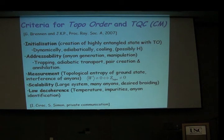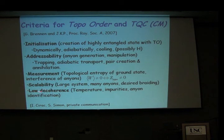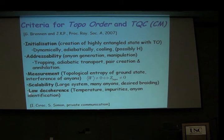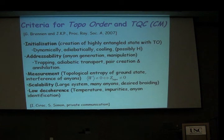Then you have addressability, because you would like in principle to generate anyons and braid them. The measurement comes as a measurement outcome after braiding, or if you can distinguish the topological entropy of your system. Then scalability means you would like to perform as many braidings as you need, so you need a big enough system. And low decoherence — topological systems can protect against decoherence, but you need to bring it to a level where it can exhibit the topological behaviors you want.